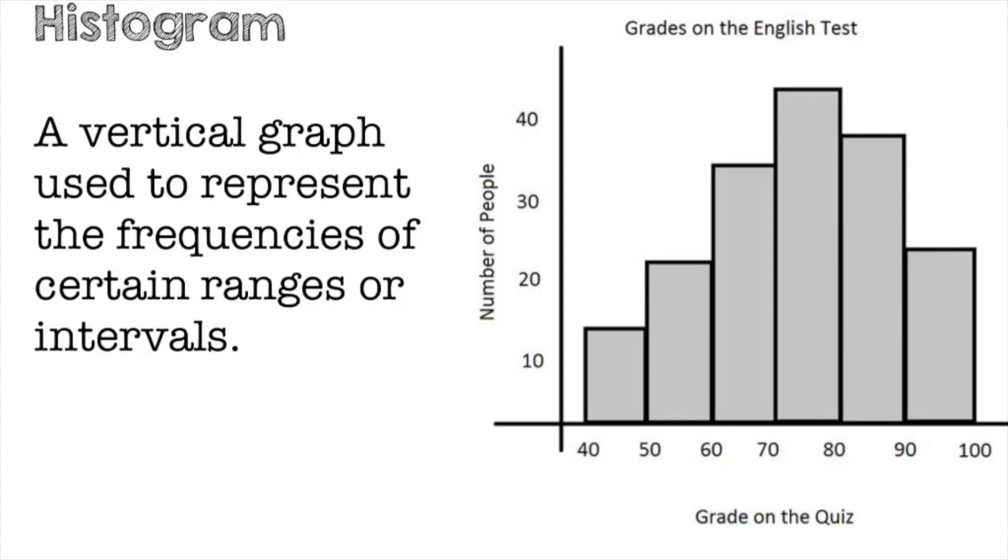You can see underneath on the x-axis, you've got 40 through 100. That whole bar where it starts at 40 is for the range between 40 and 50. So the grade between 40% and 50% is approximately 13 people.